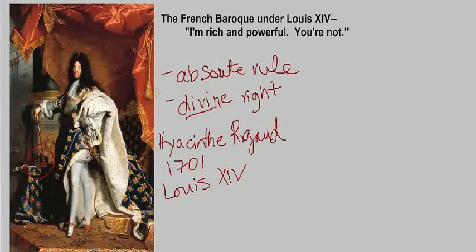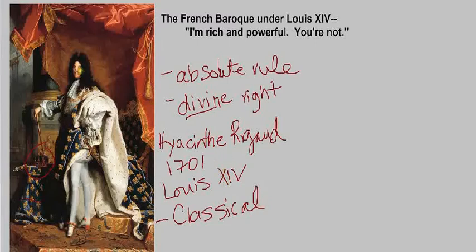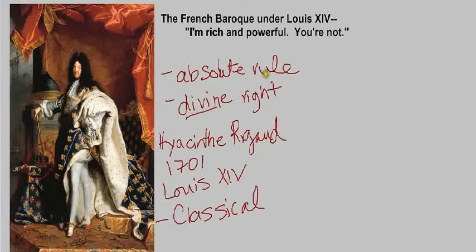Another thing to notice about this painting is the use of a classical style, and that is the style of art under Louis XIV. So when you hear Louis XIV, you should think classical. We see that in a few ways — notice there's classical architecture in the background. You can see a pilaster with a classical capital, the base of a column, and even some classical-style relief sculpture in the background. Also, in the style of the painting itself, things are very clear and crisp, and there isn't that murky realism we saw with Caravaggio and his followers in the earlier Baroque.